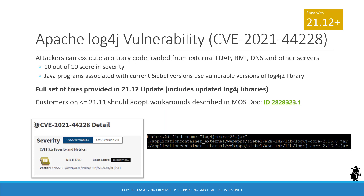Last but not least, the infamous Apache Log4j vulnerability CVE-2021-44228 — a number we will remember for a long time — also known as Log4Shell, disrupted the internet in December, where attackers can execute arbitrary code. It received a 10 out of 10 severity score, making it a very, very bad vulnerability. Oracle has taken steps to allow customers to mitigate this very early on Oracle Support. The article for Siebel points out mitigation steps if you are on versions prior to 21.12. 21.12 includes the updated Log4j core libraries, so it should be safe.